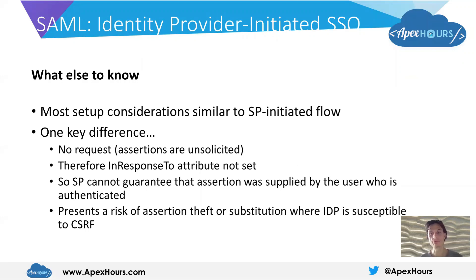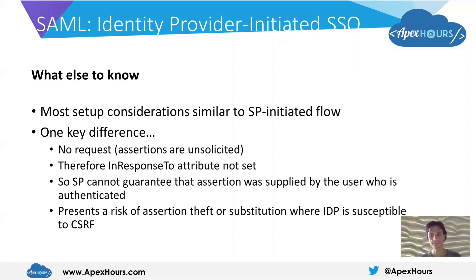A lot of the considerations are similar or the same as the service provider initiated flow, so things around size of XML requests and the need to configure metadata in both the identity provider as well as the service provider all apply. One big difference from a security perspective is that these assertions are coming unsolicited — the service provider isn't aware that the user is trying to log in until the assertion actually arrives. In the assertions for an identity provider flow, the 'in response to' attribute is not set because they're not in response to a prior request, so the service provider can't correlate this with activity taken by the user to initiate the sign-on.